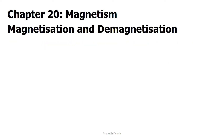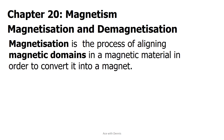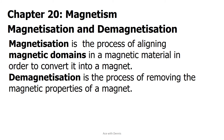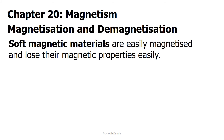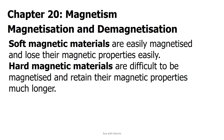Magnetization and demagnetization. Magnetization is the process of aligning magnetic domains in a magnetic material in order to convert it into a magnet. Demagnetization is the process of removing the magnetic properties of a magnet. Soft magnetic materials are easily magnetized and lose their magnetic properties easily. Hard magnetic materials are difficult to be magnetized and retain their magnetic properties much longer.